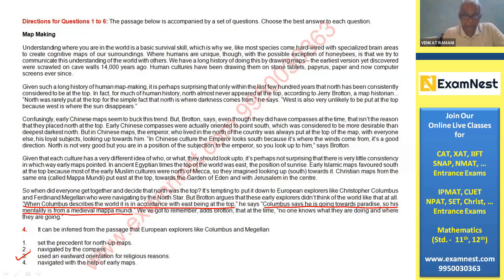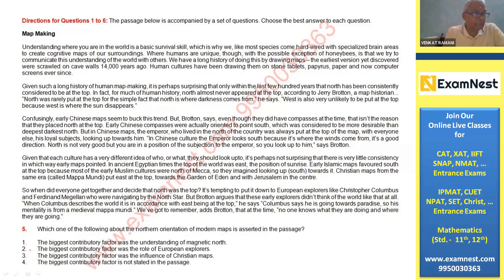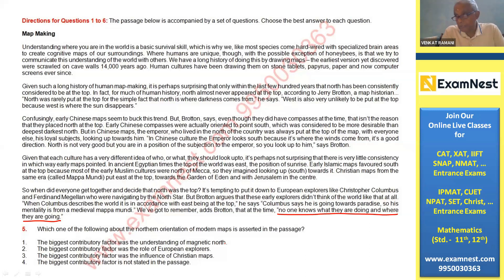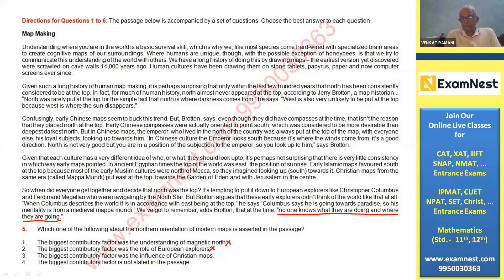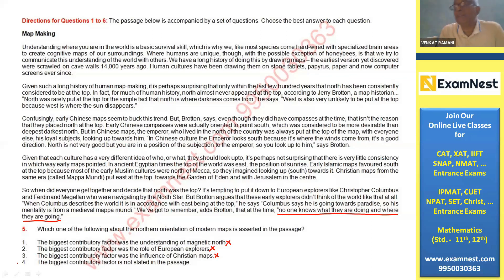On the question of which statement about the northward orientation of modern maps is asserted in the passage: the biggest contributory factor was not the understanding of magnetic law, not the role of European explorers, not the influence of Christian maps. The biggest contributory factor is not stated in the passage — that is the correct answer. The passage ends by saying no one knows what they were doing or where they were going, rather than pointing out a specific reason.